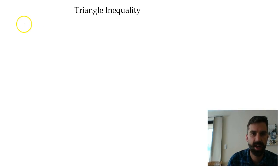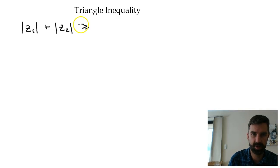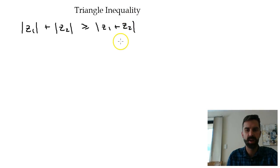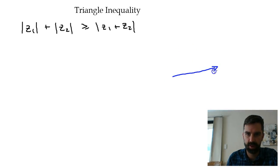So first of all, just to recap what the triangle inequality is: it says that the mod of z1 plus the mod of z2 is going to be greater than or equal to the mod of z1 plus z2. We proved that in class.